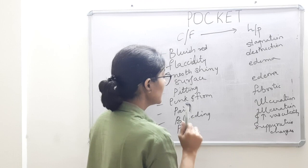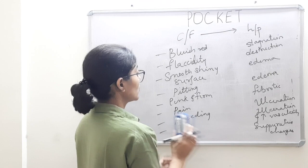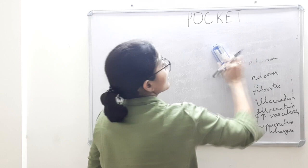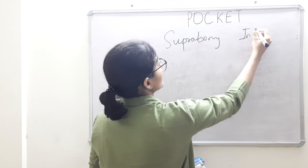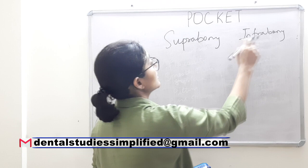Now we will proceed to the next question: difference between suprabony and intrabony pocket. Suprabony and infrabony — again, the alternative names: supraalveolar, supracrestal for suprabony; infrabony, intrabony, subcrestal for infrabony.